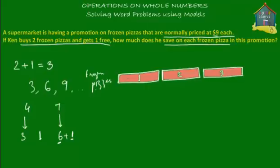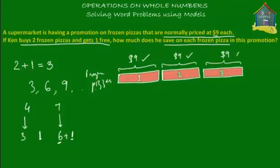Each pizza normally costs $9, so we put $9 for pizza one, $9 for pizza two, and $9 for pizza three. But how much did Ken actually pay? He paid only for pizza number one and pizza number two — he didn't pay for pizza number three. So he saved $9, the price of the third pizza. He paid two times $9 but got three pizzas.